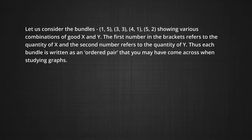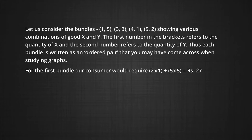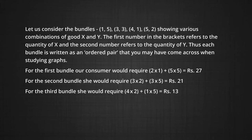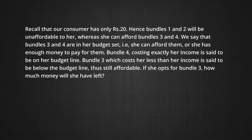You may have come across ordered pairs when doing graphs in mathematics. For the first bundle, our consumer would require 2×1 + 5×5 = 27 rupees. For the second bundle, she would require 21 rupees. For the third bundle, she would require 13 rupees, and for the fourth, 20 rupees. Recall that our consumer has only 20 rupees — hence bundles 1 and 2 will not be affordable to her, whereas she can afford bundles 3 and 4. We say that bundles 3 and 4 are in her budget set.